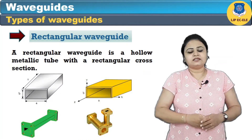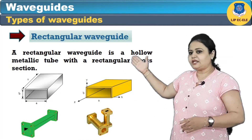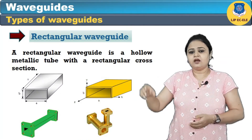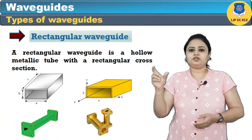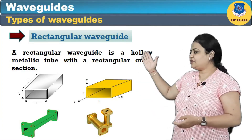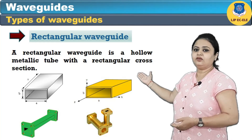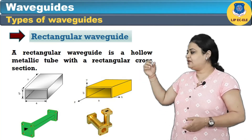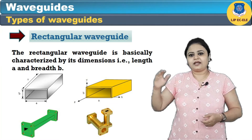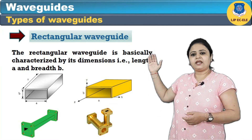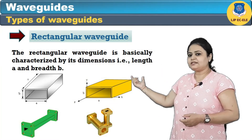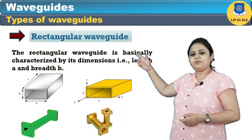Now we will see in detail the different types of waveguides, starting from the rectangular waveguide. The names of waveguides are given according to their cross section. A rectangular waveguide has a rectangular cross section having width a and height b, and is basically characterized by its dimensions — length a and breadth b.